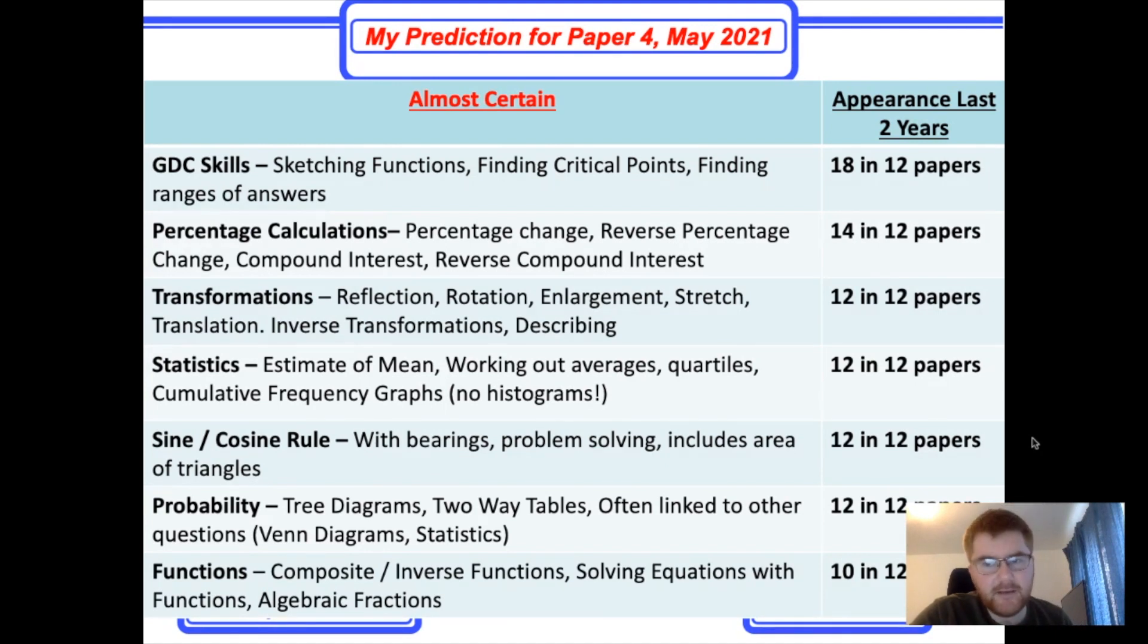Probability. Again, 12 in 12 papers. This can vary. Tree diagram questions are fairly common, occasionally two-way tables. They're often linked to other questions. You'll find often the probability section comes after a Venn diagram question or a statistics question, so keep that in mind. It may not be a complete question. And I do put this in my almost certain category. Often comes up on paper two as well, maybe in a small way.